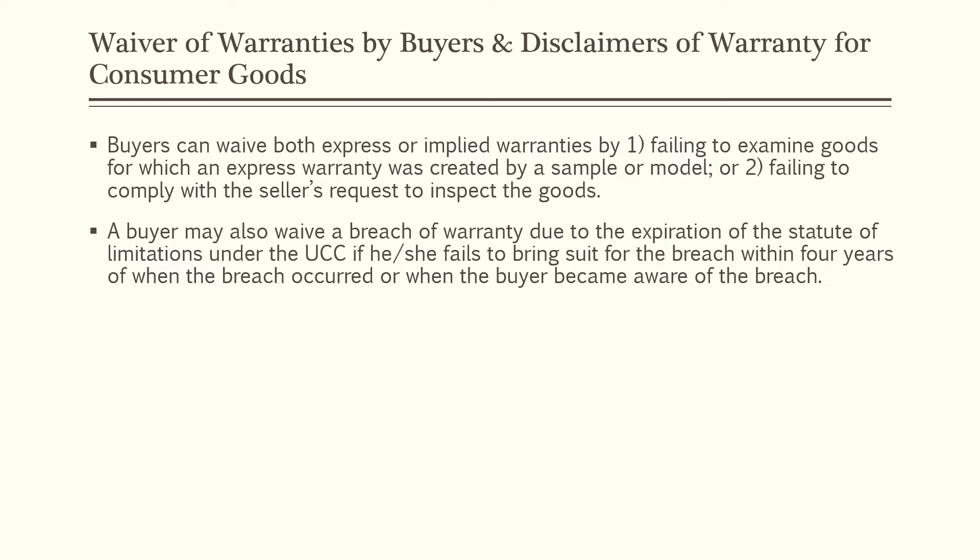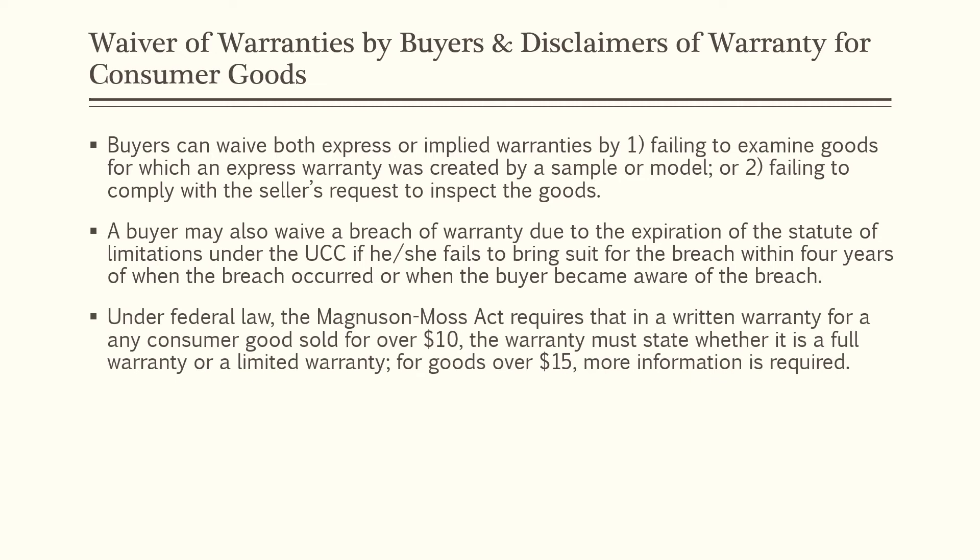Under federal law, the Magnuson-Moss Act requires that in a written warranty for any consumer goods sold for over $10, the warranty must state whether it is a full warranty or a limited warranty. For goods over $15, if the seller provides a written warranty, the seller must give the buyer easy-to-understand language — no legalese — the names and addresses of the warrantors, any limitations on the warranty, and the procedures for activating the warranty. Under this Act, a written warranty is not required, but the Act prohibits companies from disclaiming implied warranties during any period that its written warranty is in effect.